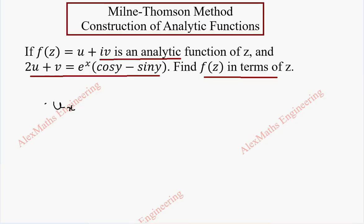So ux: 2ux plus vx equals — since y terms are constant, the derivative of e to the power x is e to the power x — and all the constants are written as cos y minus sin y.